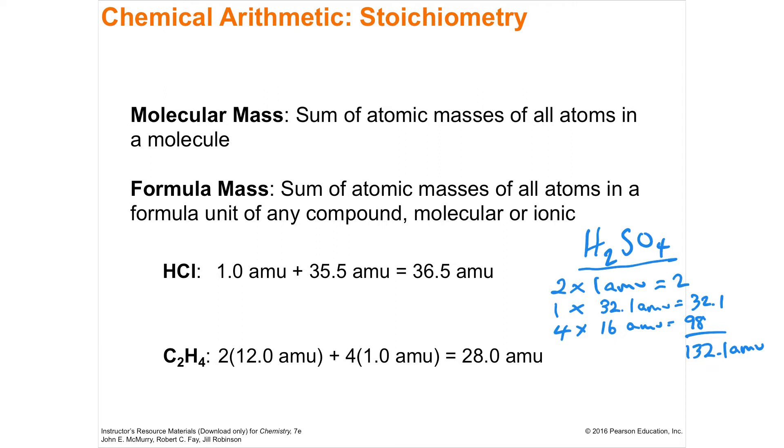H2SO4, which is made out of positives and negatives. Anytime that you have cations and anions, you have ionic bonds, it's called a formula mass.